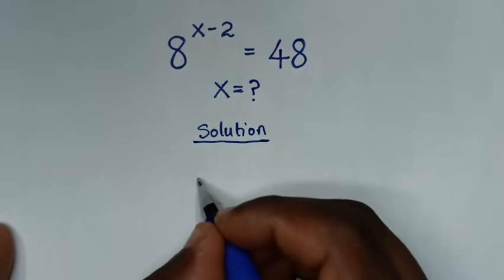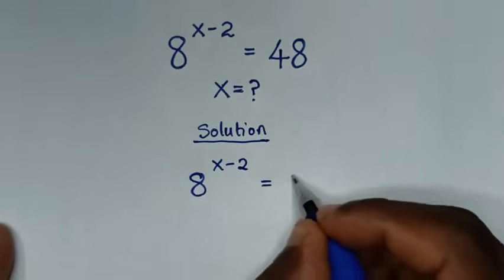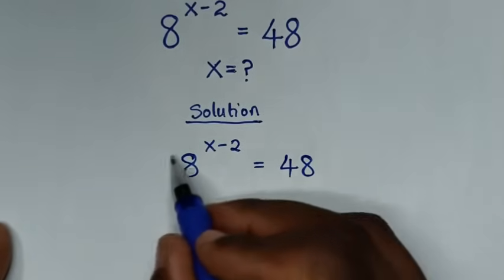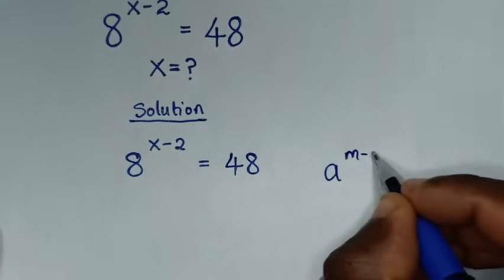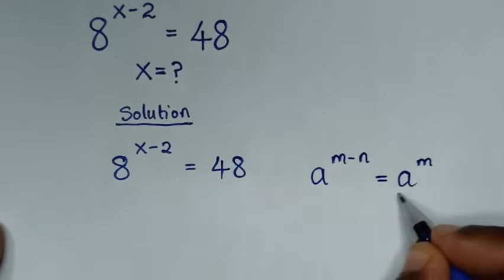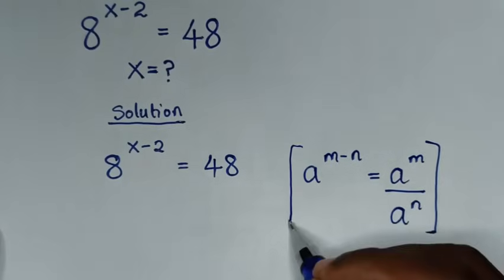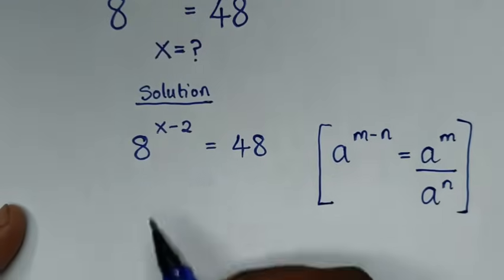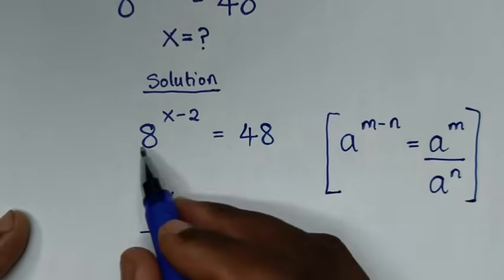From our problem, which is 8 power of x minus 2 is equal to 48. Here 8 power of x minus 2 is in the form of a power of m minus n, which is equal to a power of m over a power of n. So we'll apply this rule, giving us 8 power of x over 8 power of 2.